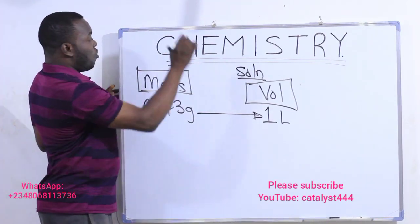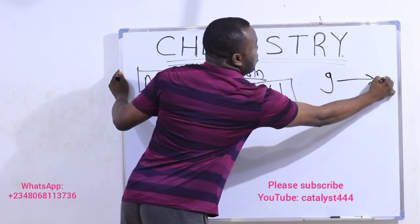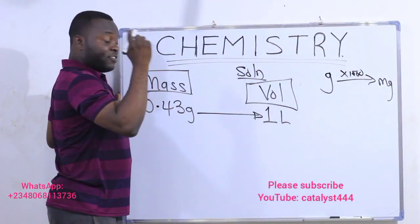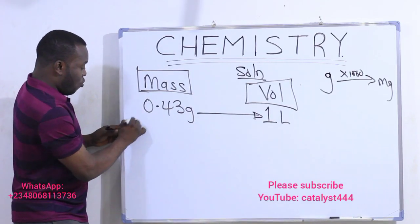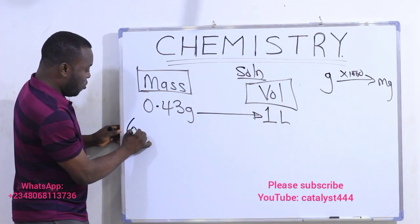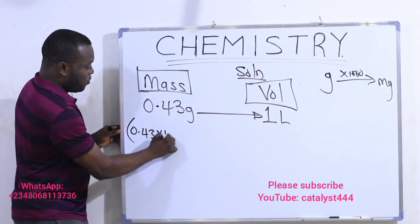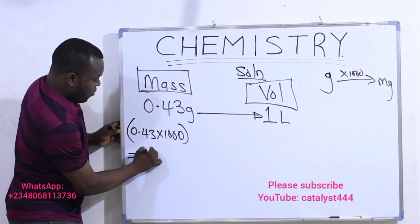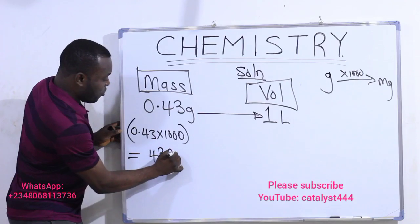And you know, to convert from grams to milligrams, all you need to do is multiply by 1,000. That means, I will convert this to milligrams. That will give me 0.43 multiplied by 1,000, and that gives us 430 milligrams.